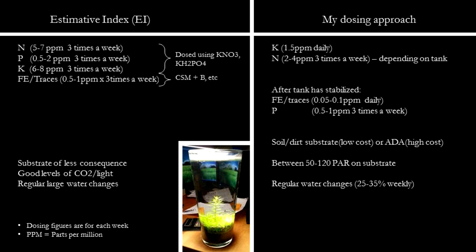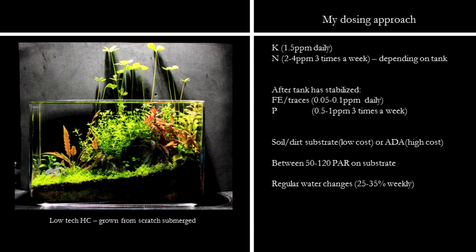Learning from both approaches, this is the current system that I use. First off, a good substrate is crucial — it does a lot of work in terms of fertilization. Fractured clay substrates such as fluorite, eco-complete, or plain sand — I stopped using those years ago. Nowadays I only have two choices: if I'm going for a low-cost method, I'll choose soil; if cost is not a concern, I'll buy ADA or its equivalents.